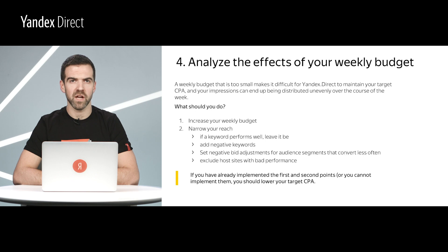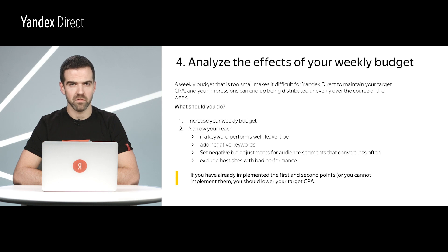What can you do if you end up in this situation? After all, weekly budget limits do in fact affect your reach and your CPA. You can increase your weekly budget, narrow your reach, leave keywords that perform well, add negative keywords, set negative bid adjustments for less effective audiences, or exclude host sites with bad performance. If you have already implemented the first and second points, or you cannot implement them, you should lower your target CPA.